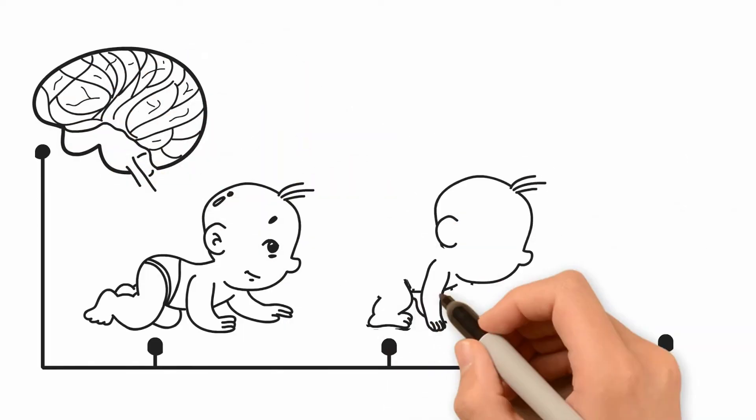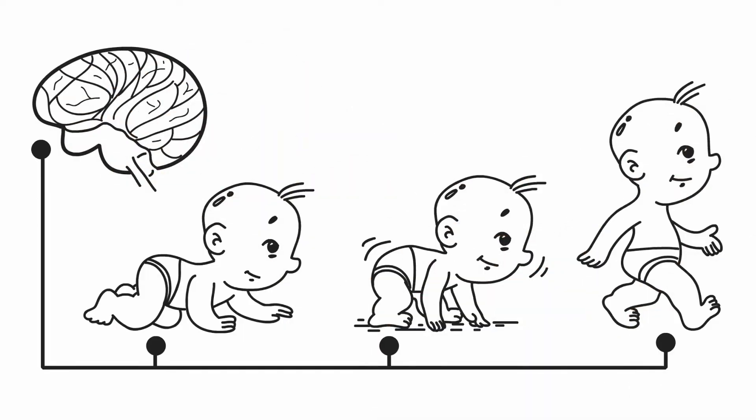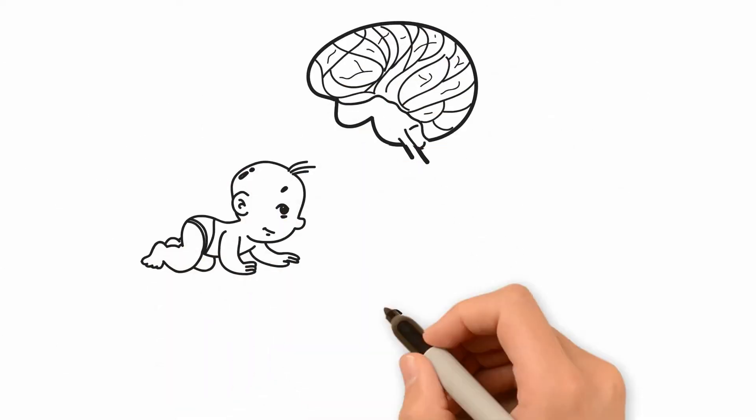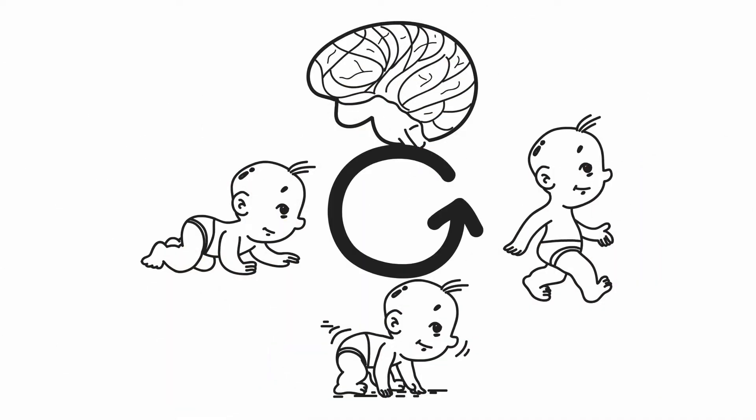Push off, lean slightly forward, keep your balance, step, and repeat. With enough repetition, he develops the neural pathways to know just what to do.